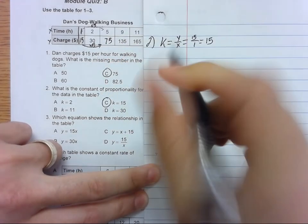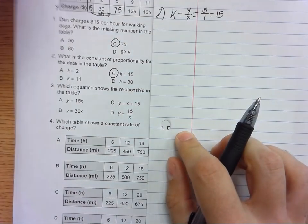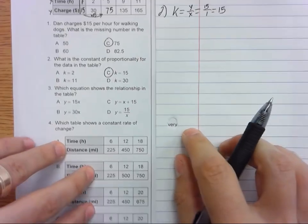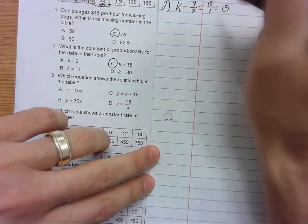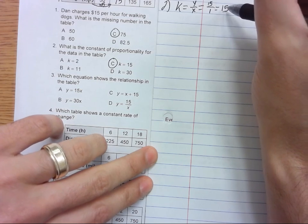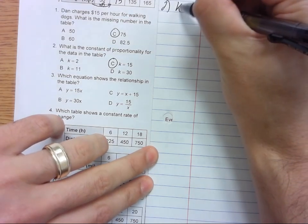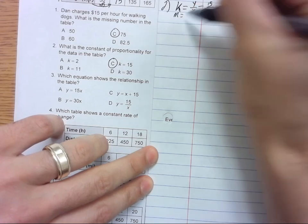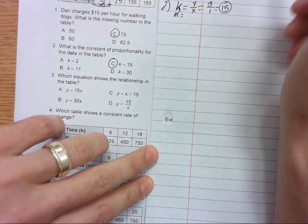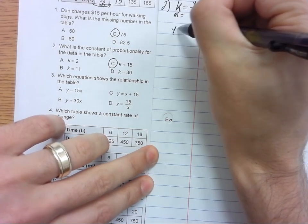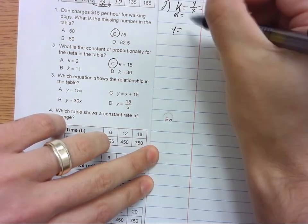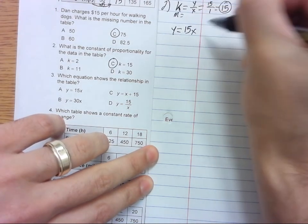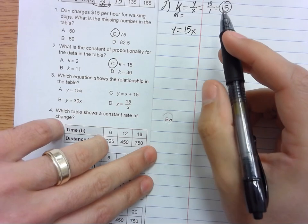Three: which equation shows the relationship in the table? So here is K, and remember the K for a proportional relationship is the same as M. So if this is our slope, we would get Y equals 15X. So three is A.